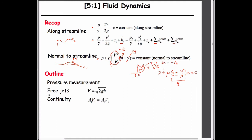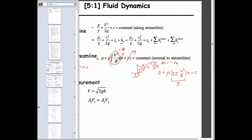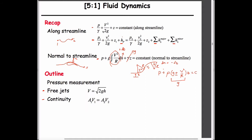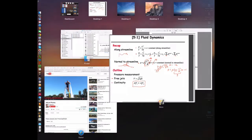Let's talk about using Bernoulli's equation in a couple of ways: first to get the equation for a free jet, and also continuity. Continuity is the idea that if we write Bernoulli upstream and downstream we have six terms, and we need to know five to solve it. Sometimes we use continuity to relate upstream and downstream velocities through the ratio of flow areas.